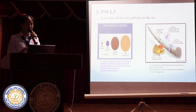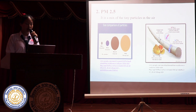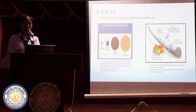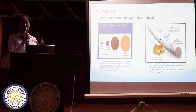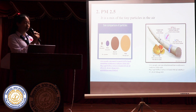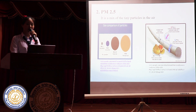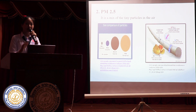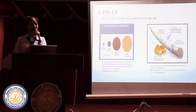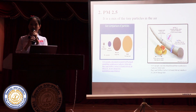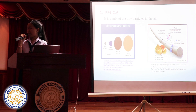Next, let's look at PM2.5. PM2.5 is a mix of tiny particles in the air, which has a diameter less than 2.5 micrometers, or about 3% of the width of a human hair. That's all for me. Next, Mr. Park is going to tell you about the causes of PM2.5.